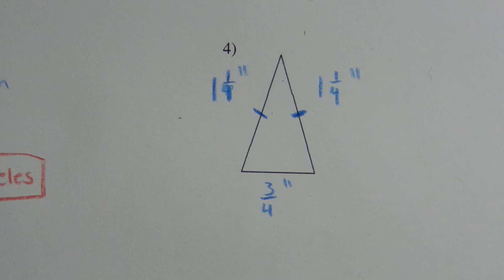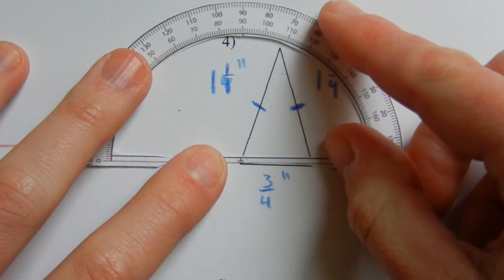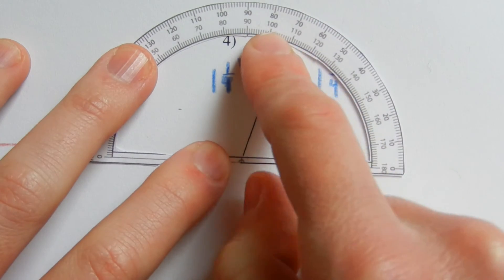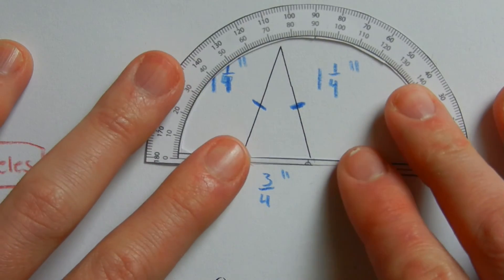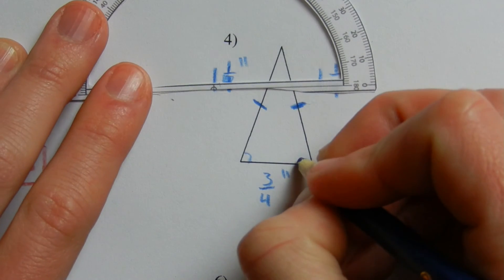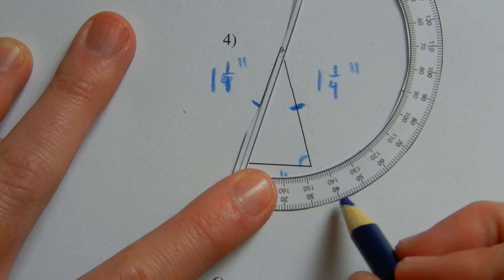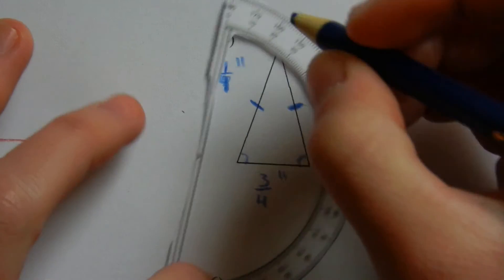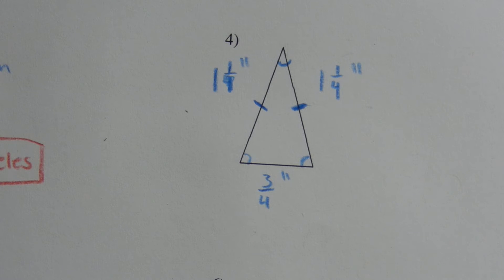Now we just have to figure out whether it's obtuse, acute, or right. Looking at each of the angles: this first angle falls between 70 and 80 degrees, so it's acute. This next angle also falls between 70 and 80 degrees, so it's also acute. The last angle falls somewhere between 30 and 40 degrees, so it's also acute. Since all angles are acute and two sides have equal length, number four is an acute isosceles triangle.